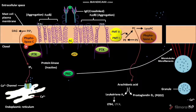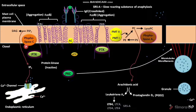Leukotriene A4 forms substances like LTB4, LTC4, LTD4, and LTE4. LTC4, LTD4, and LTE4 are called SRSA, which stands for slow-reacting substance of anaphylaxis. The SRSA undergoes secretion. Prostaglandin D2 also undergoes secretion.